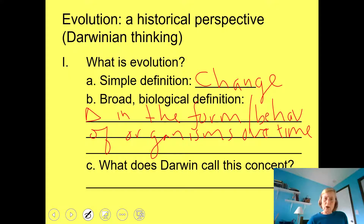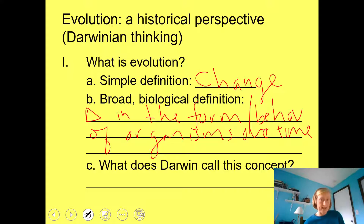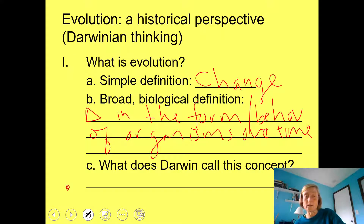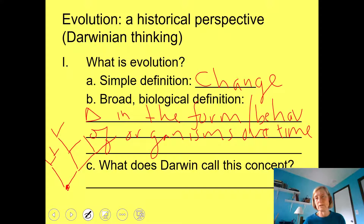Darwin called this concept descent with modification — the forms of organisms have been modified from their ancestors in their DNA, behavior, physiology, morphology, etc. One ancestral form could give rise to many new forms, a branching-like concept. So you've got one ancestral form that undergoes change over time, and with more change we get a variety of different organisms with different forms, physiologies, and behaviors — so different that they don't breed together. They're different species.